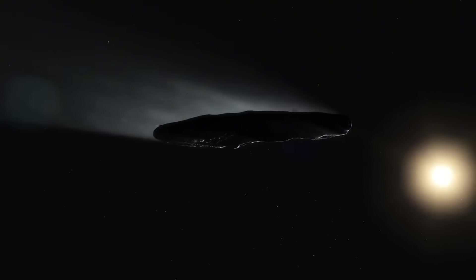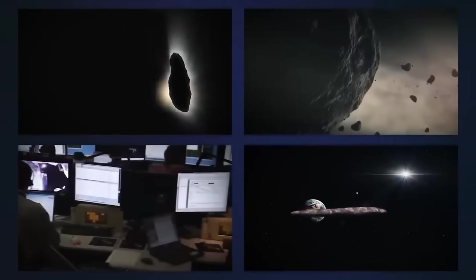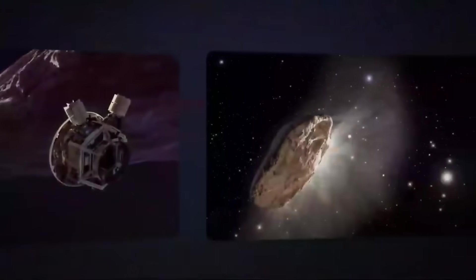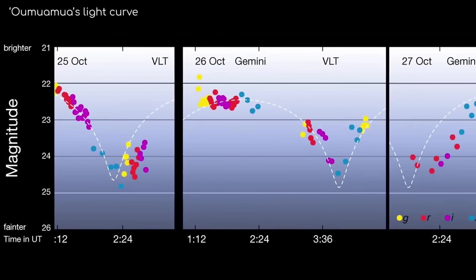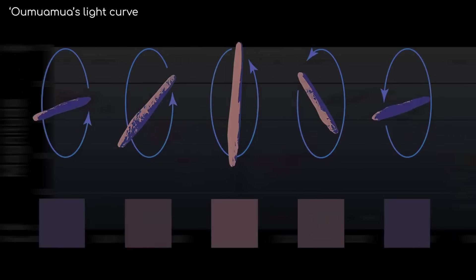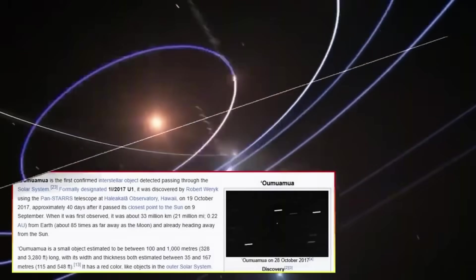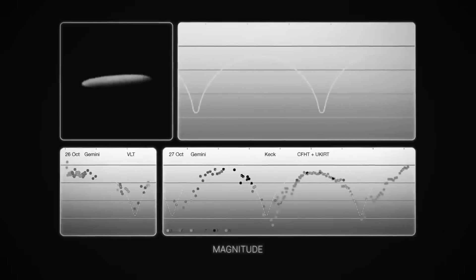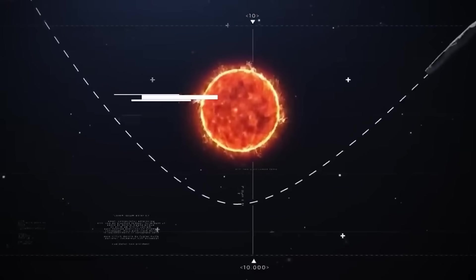And right after this revelation, astronomers spotted a brand new interstellar object racing into our solar system. Coincidence? Or the start of something bigger? The timing has left scientists worldwide scrambling to make sense of what's happening above our heads. The cosmic mystery that began in 2017 just took an unexpected turn. And what comes next could change how we view our place in the universe forever.